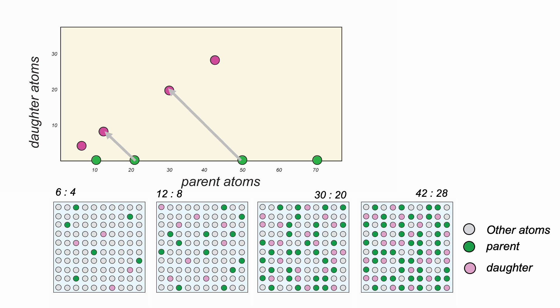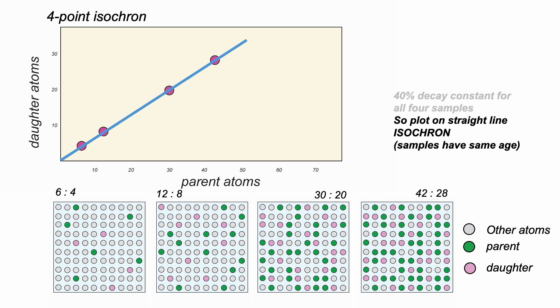So if the probability of decay is the same for all parent atoms and the duration, the age of our sample, is the same for all of them, then they plot on a straight line. This is an isochron. The samples are the same age as each other.